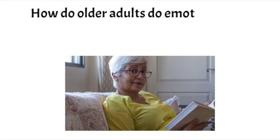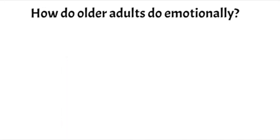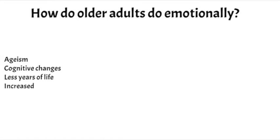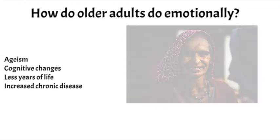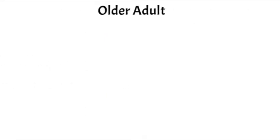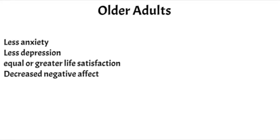It was first assumed that older adults would do worse with emotional regulation. The reason why people thought that was because of how culture treats older adults and some of the things that accompany aging — including cognitive decline, fewer years to live, and increased levels of chronic disease. But surprisingly, we find that older adults have lower levels of depression and anxiety, and they have at least equal life satisfaction to younger adults.